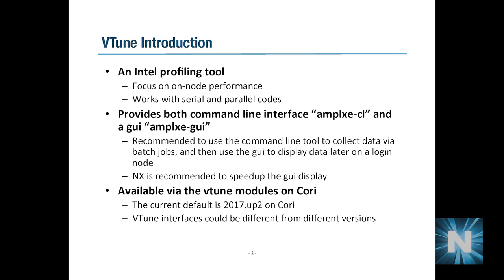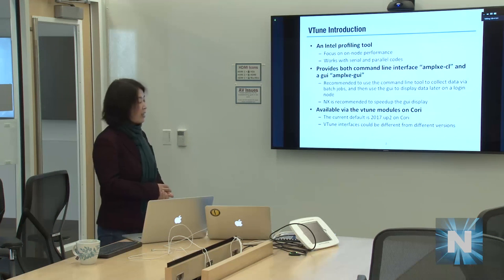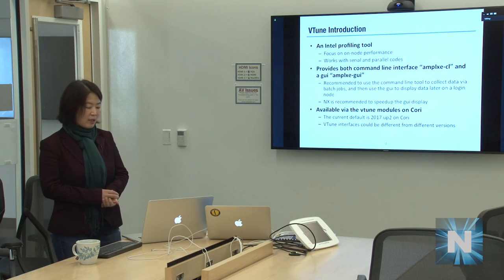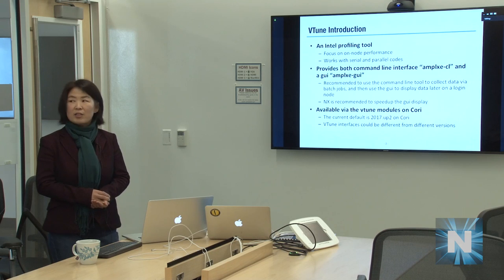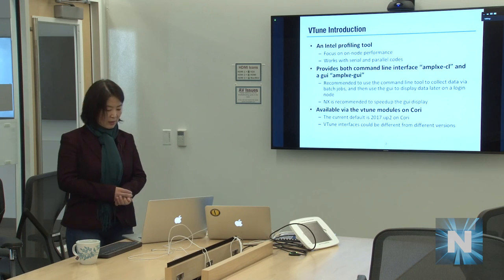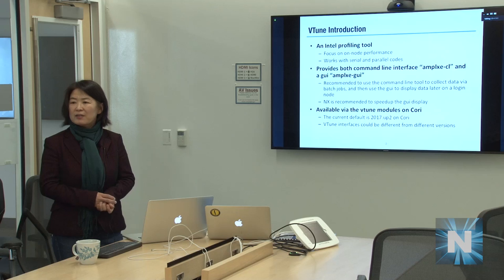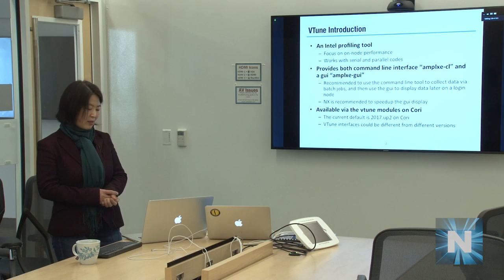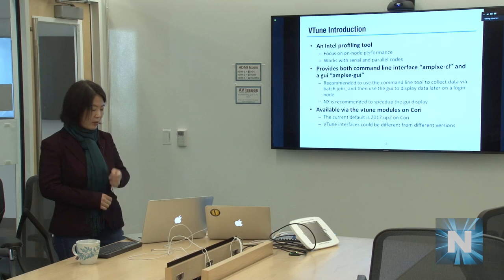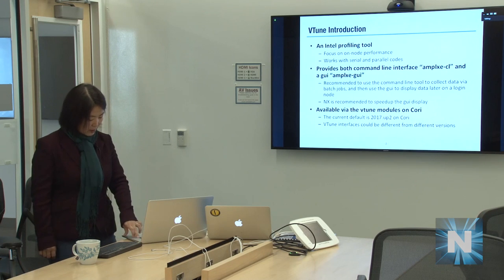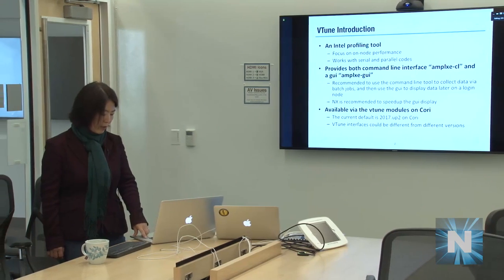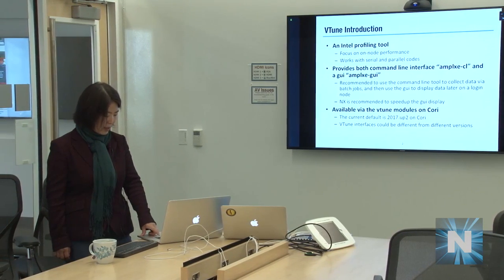VTune is available on Cori as a module like all our other software. Our current default version is 2017 Update 2. I'm emphasizing the version because VTune keeps changing its interfaces, how it looks, the analysis types available — they can add more, rename them, and so on. The results I display in this talk are from VTune 2017 Update 2.